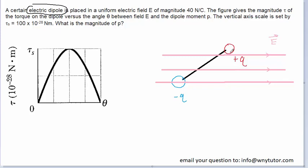We have labeled the positive charge plus q and the negative charge minus q to indicate that their magnitudes are the same. When you place this electric dipole in the electric field, the field is going to cause the dipole to rotate.